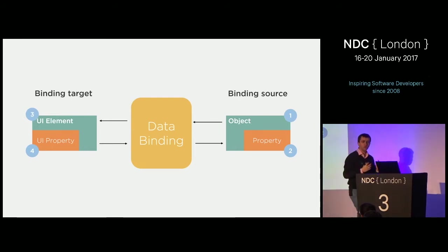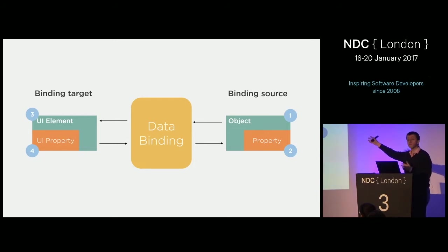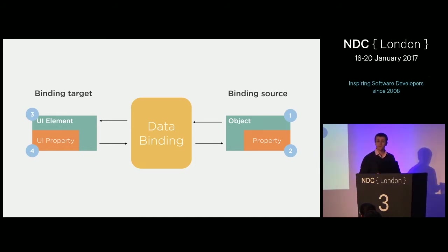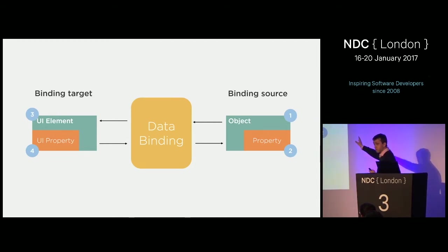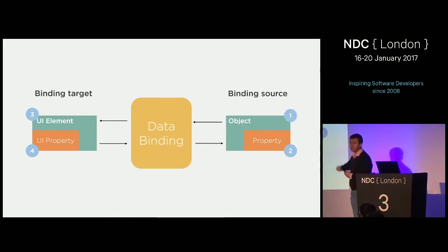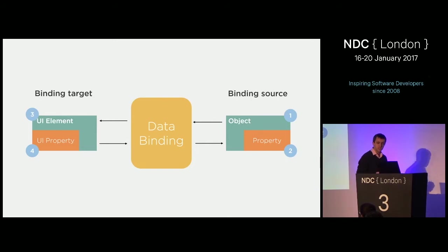Data binding can also apply conversions on the data. For example, if we have a date from a database that is unformatted, we can use converters to convert it into a more readable format. Data binding is bi-directional and keeps data in sync — if the data changes, the UI is automatically updated. This automatic synchronization only works if certain conditions are met, which I'll come to later.